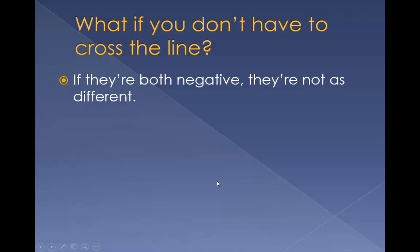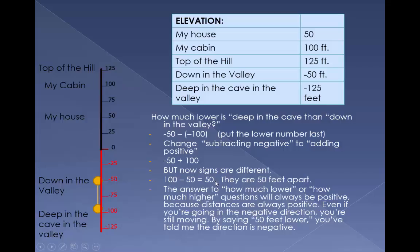What if you don't have to cross the line? If they're both negative, they're not as different. Here's an example. How much lower is deep in the cave than down in the valley? That would be negative 50 minus negative 100. Put the lower number last.